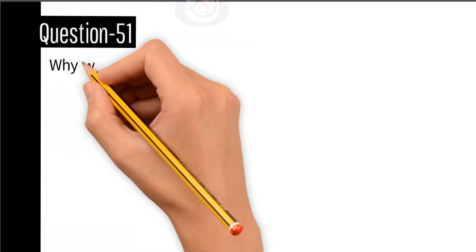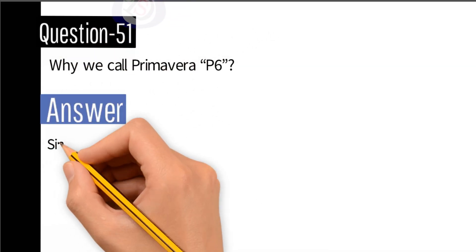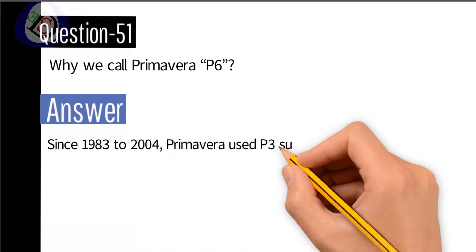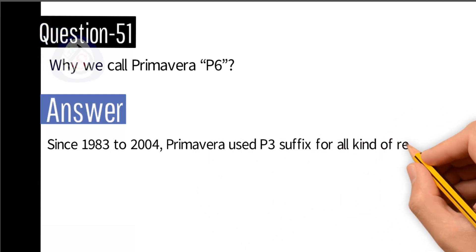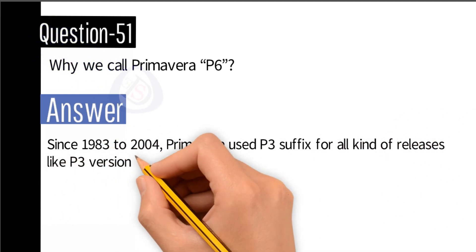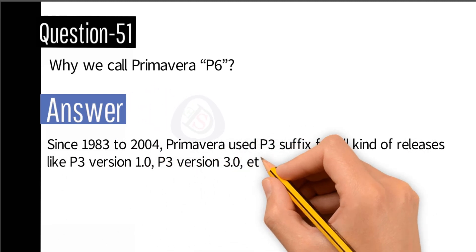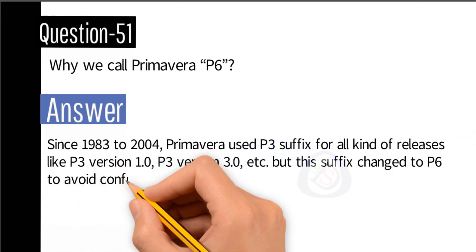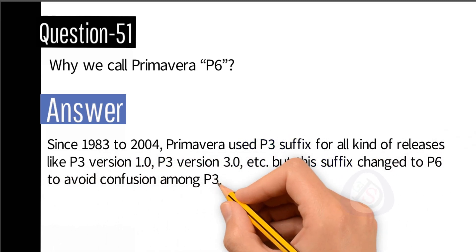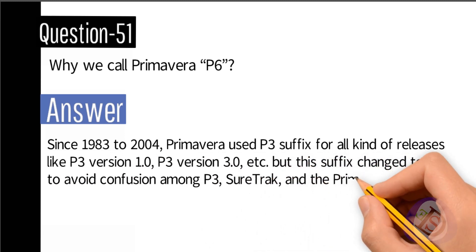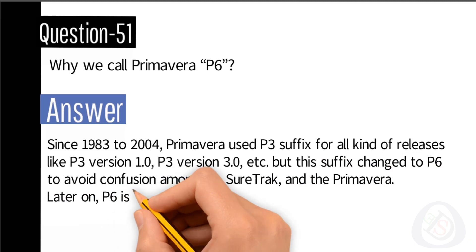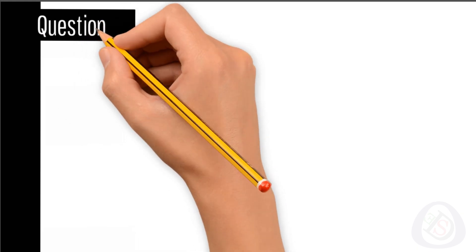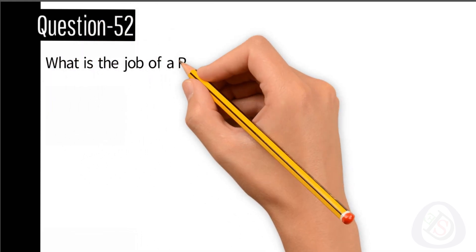Question number 51: why do we call it Primavera P6? Since 1983 to 2004, Primavera used the P3 suffix for all kinds of releases, like P3 version 1.0, P3 version 3.0, etc. But this suffix changed to P6 to avoid confusion among P3, SureTrak, and Primavera. Later on, P6 was kept as the suffix permanently.